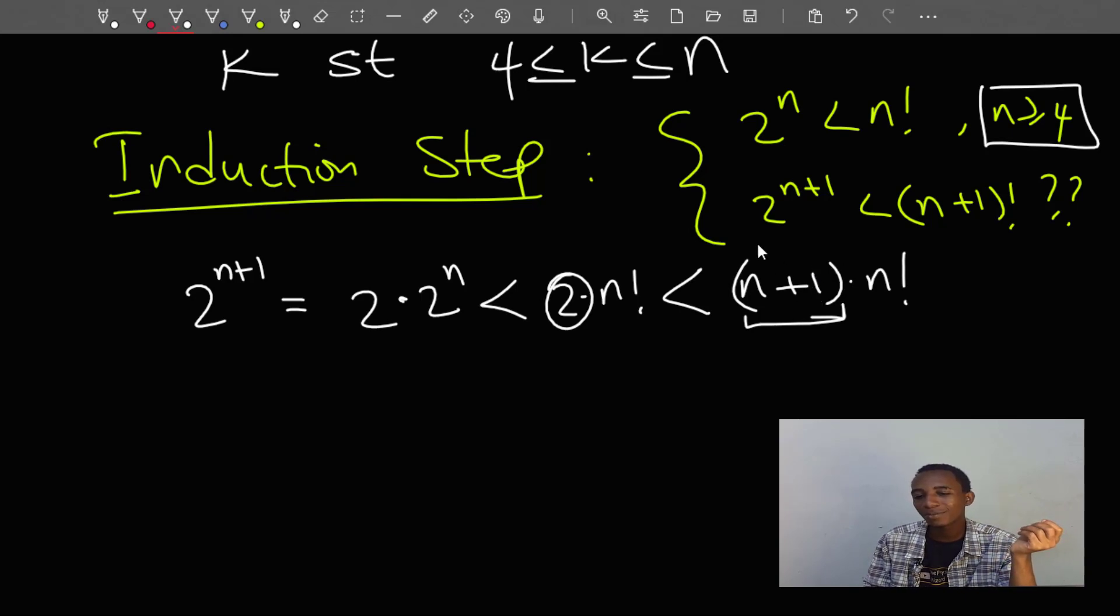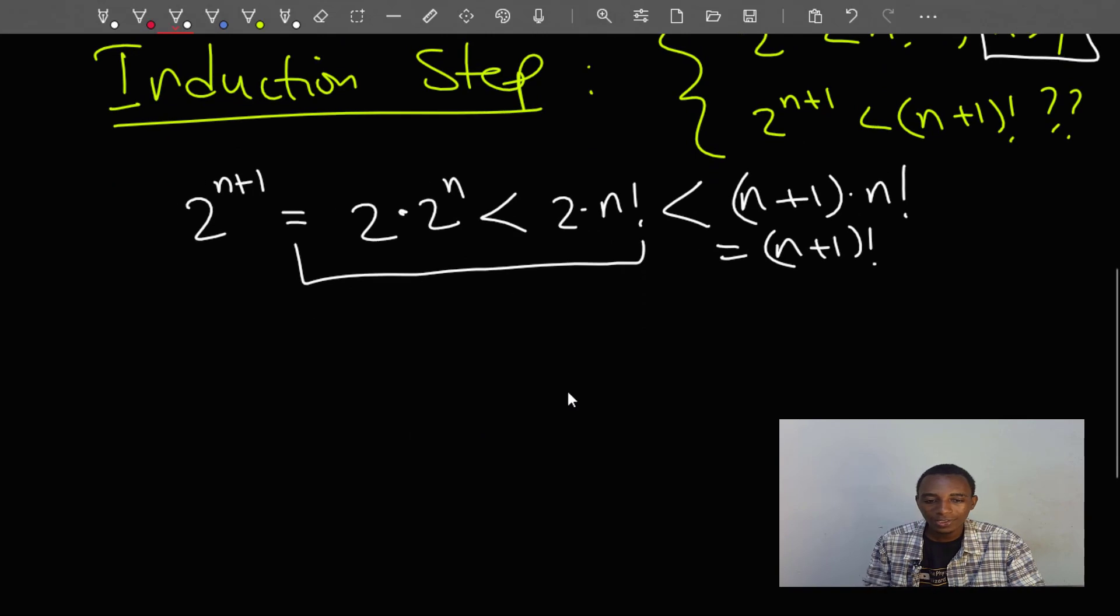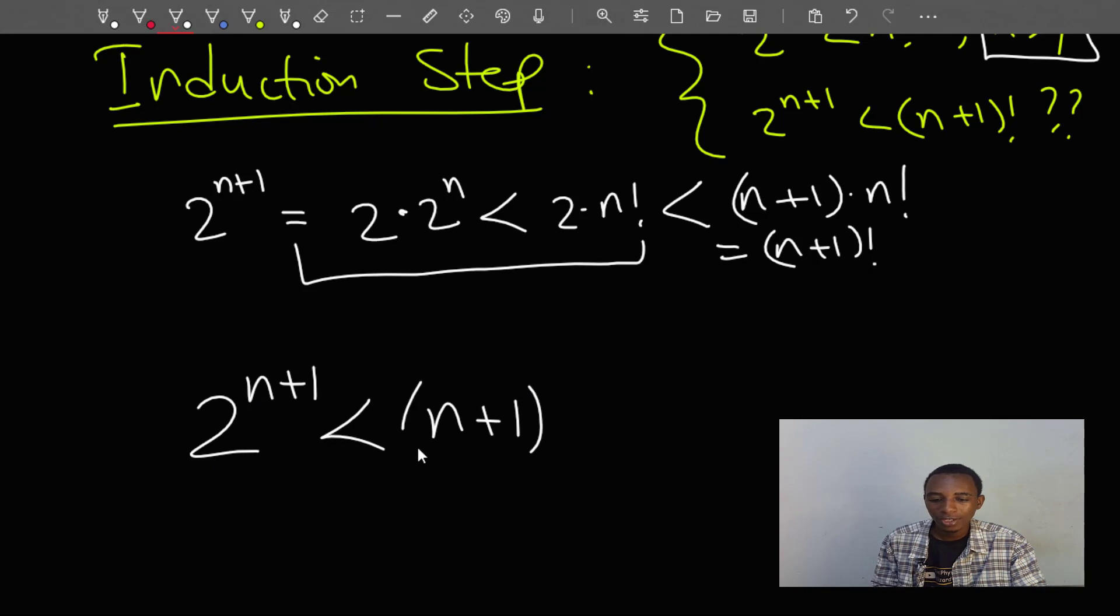Which is way greater than 2. So n plus 1 times n factorial is greater than 2 times n factorial. And this is nice because now this is the same as n plus 1 factorial from the properties of factorials. So I can now leave out everything here and just come to this.